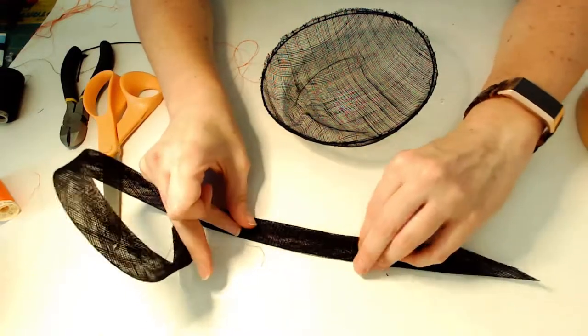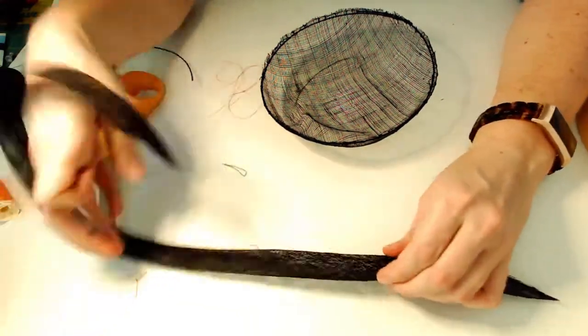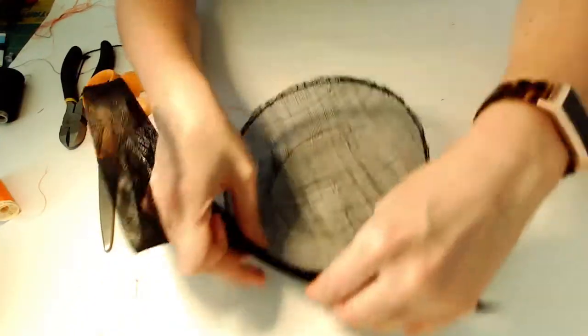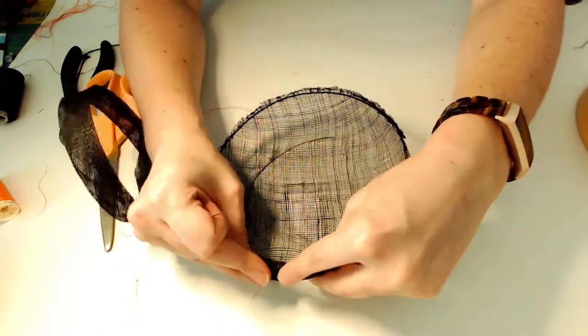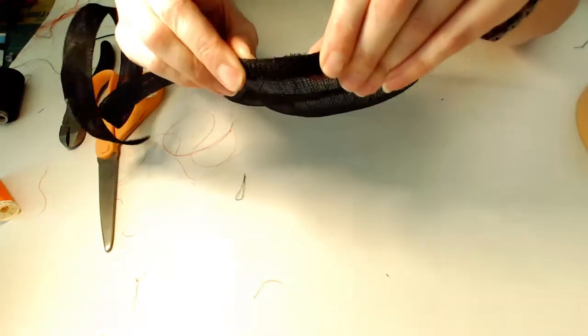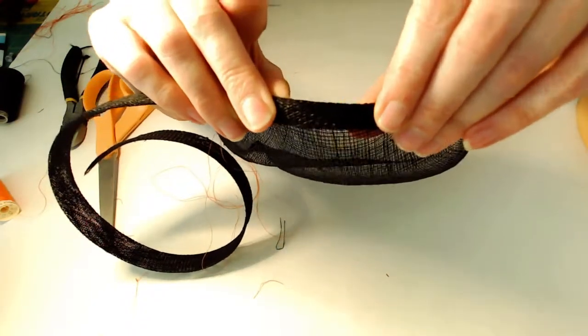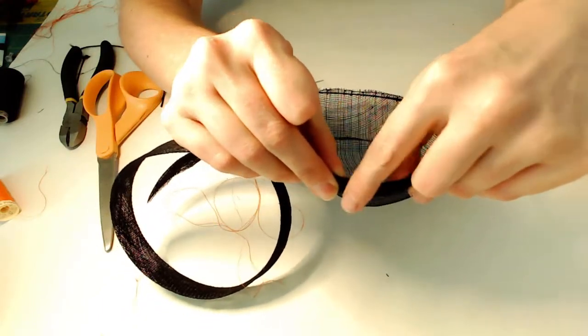So that's what creates the nice finished edge. And then you fold that in half with all of those raw edges to the inside. And I'm going to place that over the edge of my hat. So it should be half on the outside and half on the inside. So it's half the width of what the binding is.